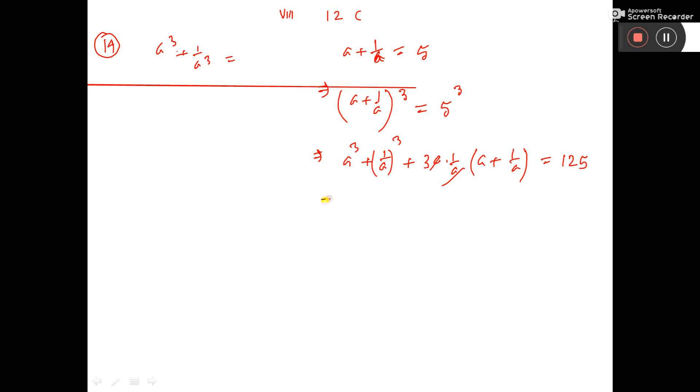So here we have a cube plus 1 by a cube plus 3 into this value which is given as 5, so putting 5 here, that equals 125.